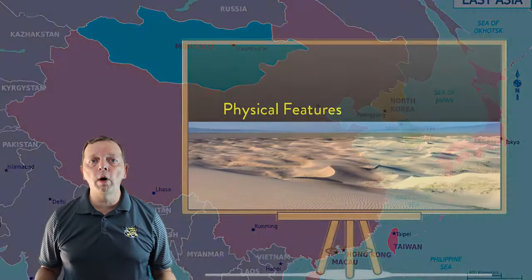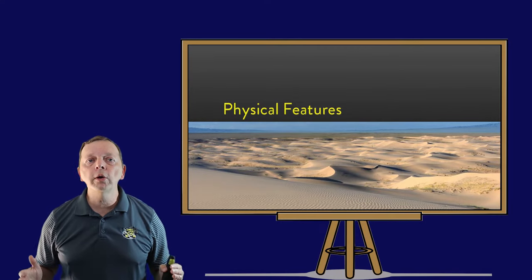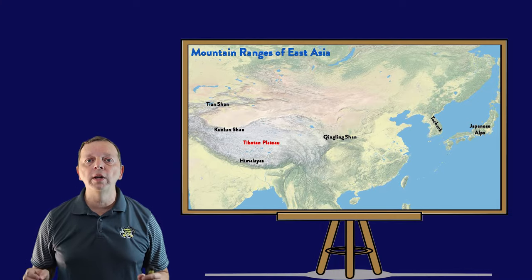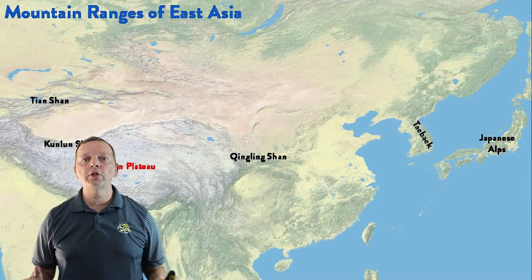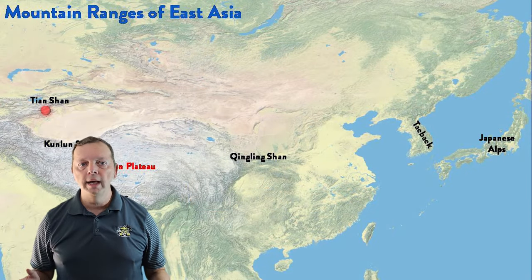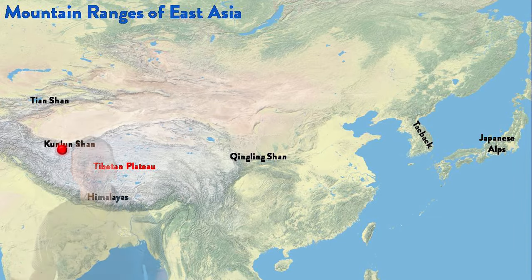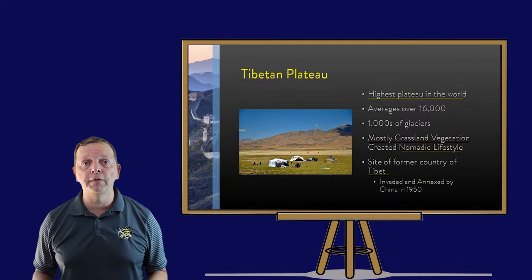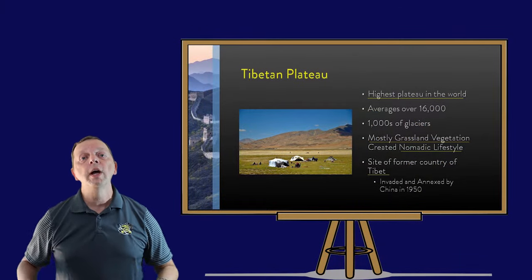The physical features of the region include several mountain ranges. At the northwest corner of China, there is the Tian Shan, and to its south is the Kunlun Shan. South of the Kunlun Shan are the Himalayas, and in between these two mountain ranges is the highest plateau in the world, the Tibetan Plateau, with an average elevation of around 14,000 feet.